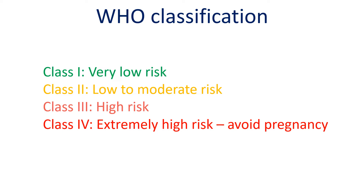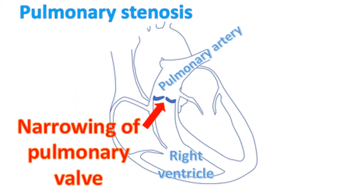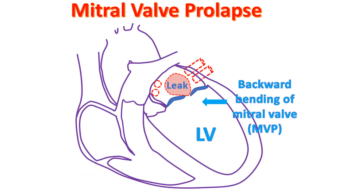Class 1 is the very low risk group, Class 2 low to moderate risk, and Class 3 high risk. Class 1 conditions include mild narrowing of the pulmonary valve, small patent ductus arteriosus, and mitral valve prolapse. The pulmonary valve is the valve between the pulmonary artery, which carries blood to the lungs, and the right lower chamber of the heart. Patent ductus arteriosus is a communication between the aorta and pulmonary artery. Mitral valve prolapse is a bending backwards of the valve between the left upper and lower chambers of the heart. Successfully repaired simple birth defects also come under the low risk category.